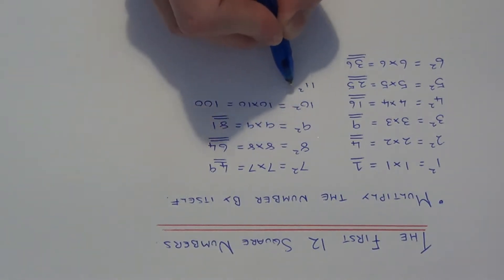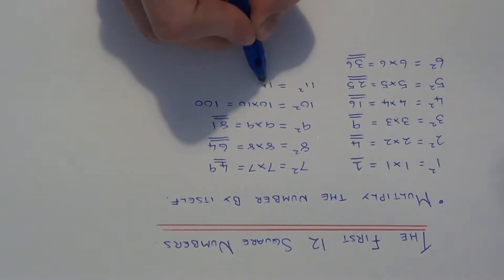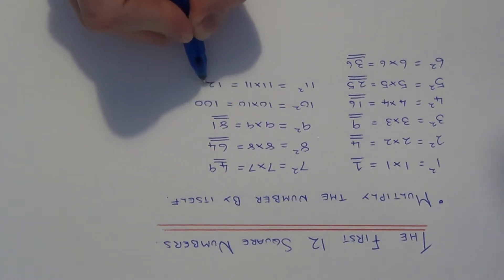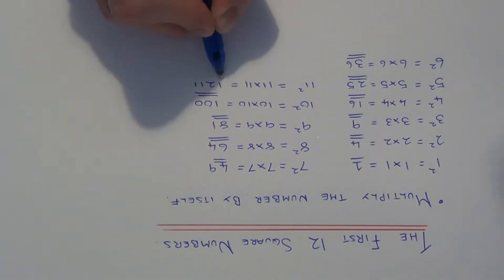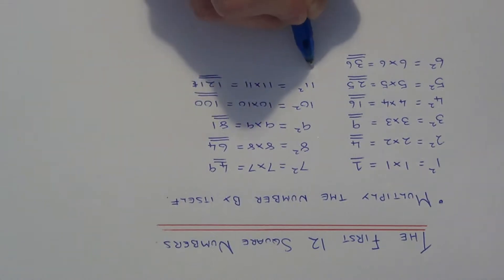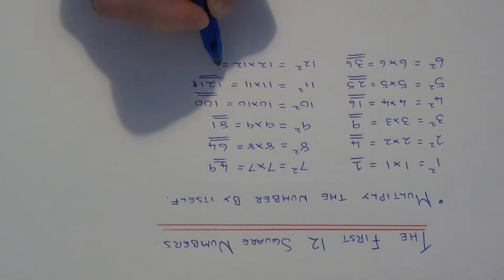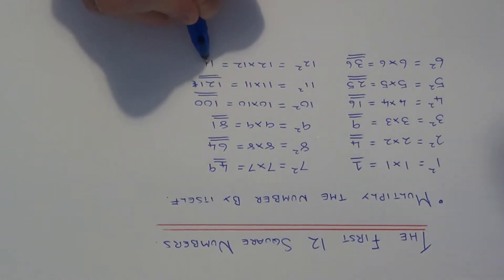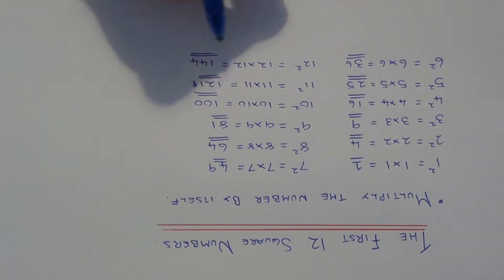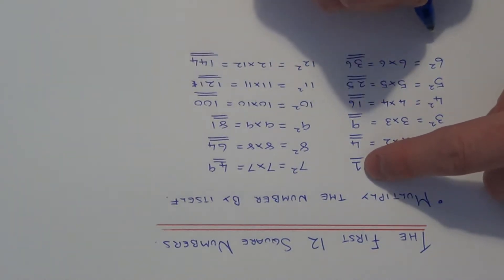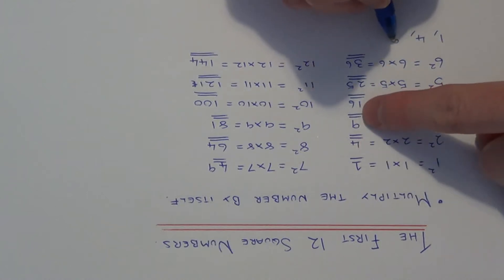The eleventh square number will be 11 squared, which is 11 times 11, which is 121. The next one will be 12 squared, which is 12 times 12, which gives us 144. So your first 12 square numbers are: 1, 4, 9,